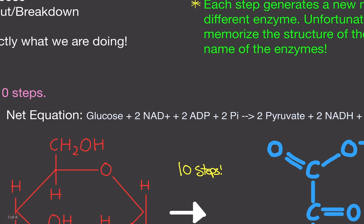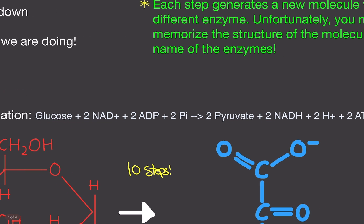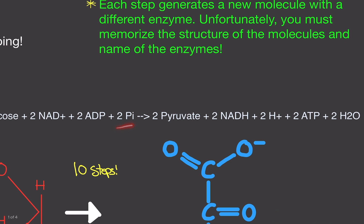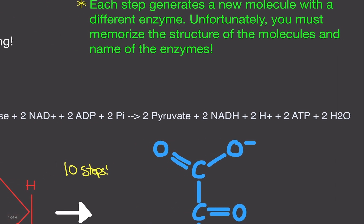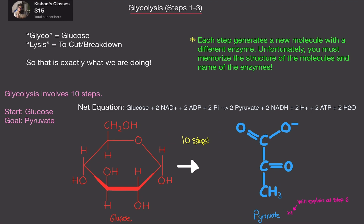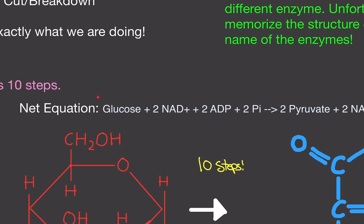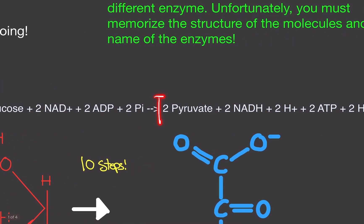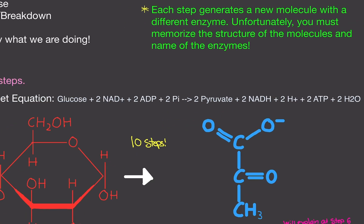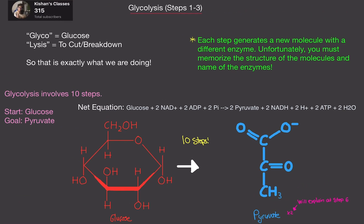Here is the net equation for glycolysis. We are starting with glucose, 2 NAD+ molecules, 2 ADP molecules, and 2 phosphate molecules. And we're ending with 2 pyruvate molecules, 2 NADH molecules, 2 protons, 2 ATP molecules, and 2 water molecules. Notice that we are starting with 1 molecule of glucose but we're ending with 2 molecules of pyruvate. I'll get into this at step 6 because it will make much more sense. But for this video, let's just take it step by step with steps 1, 2, and 3.